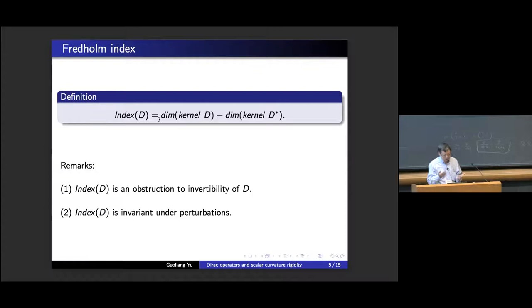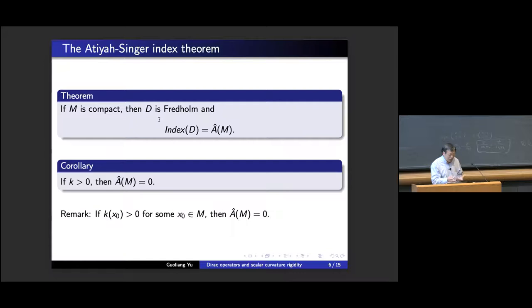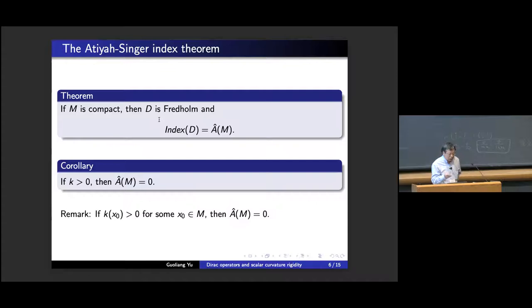Let's go ahead and compute this — that was classical work, the so-called Atiyah-Singer index theorem. For compact manifolds, this quantity can be computed; it's a topological invariant, something like the Euler number — very computable. In particular, if the scalar curvature is positive, this topological invariant has to vanish. This is the classical part of the story.